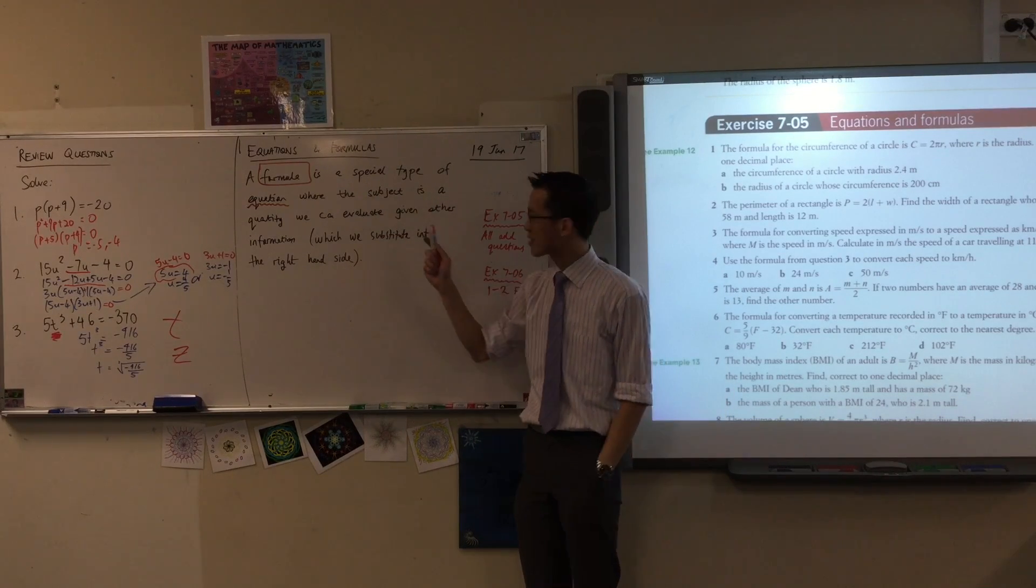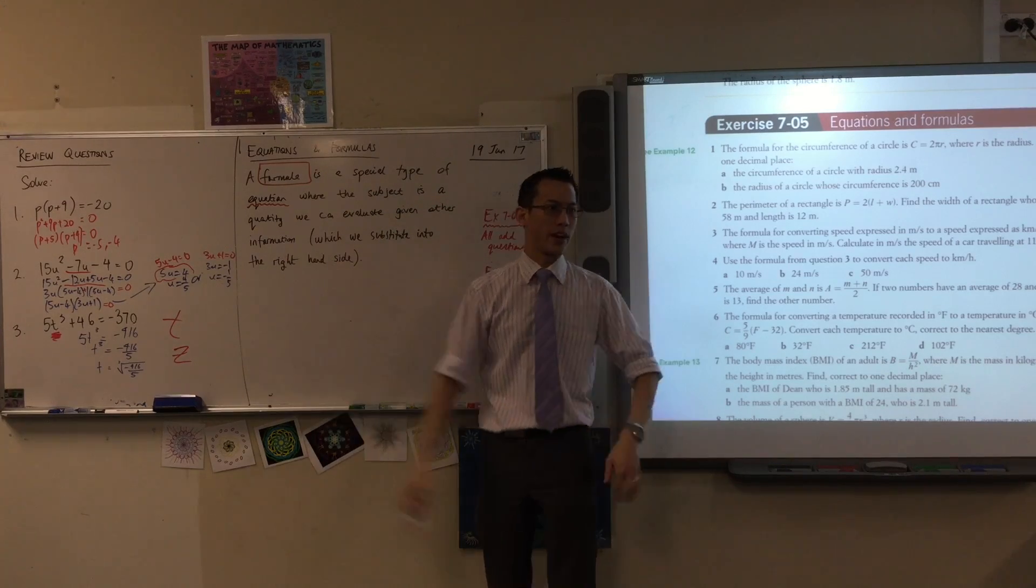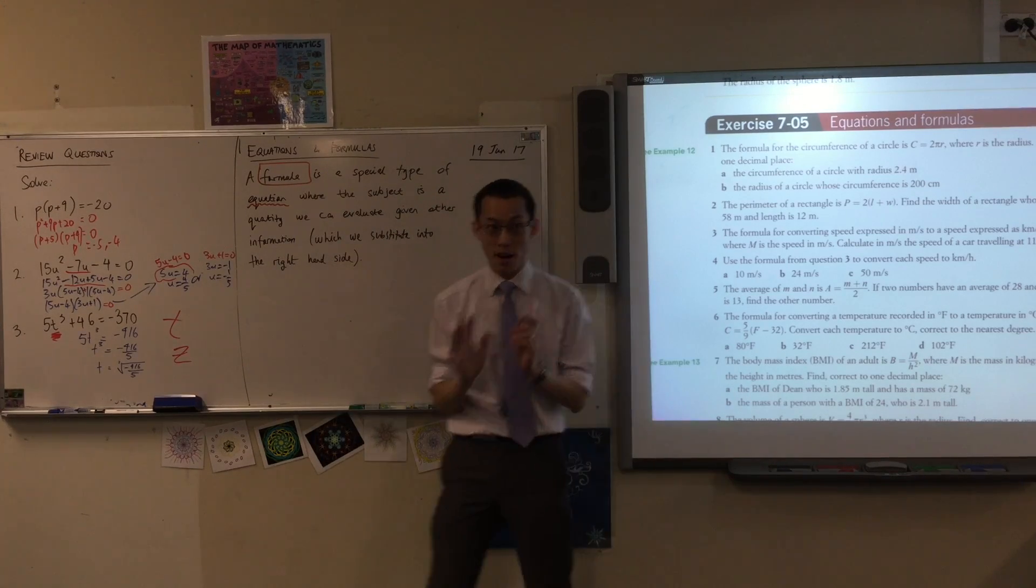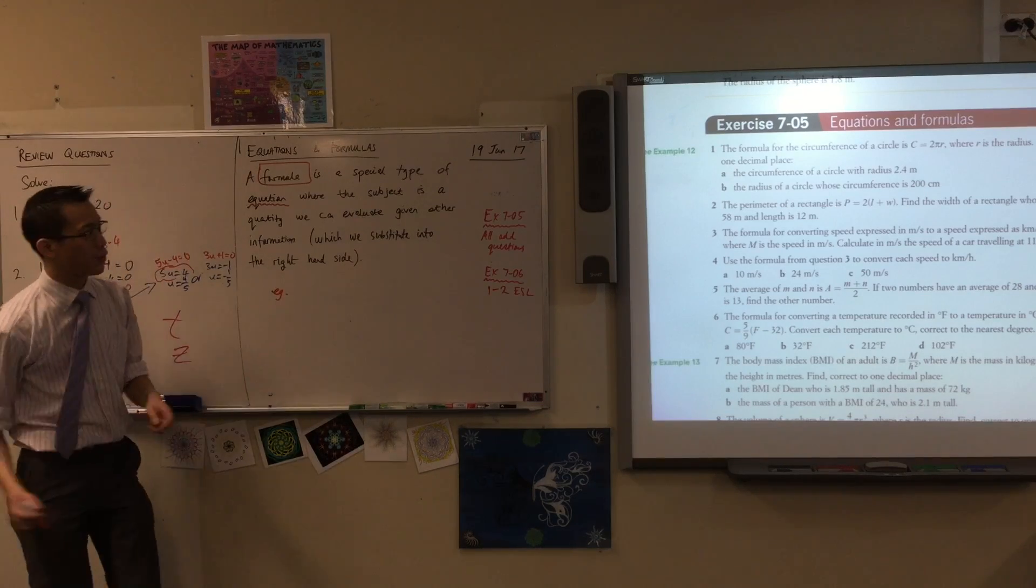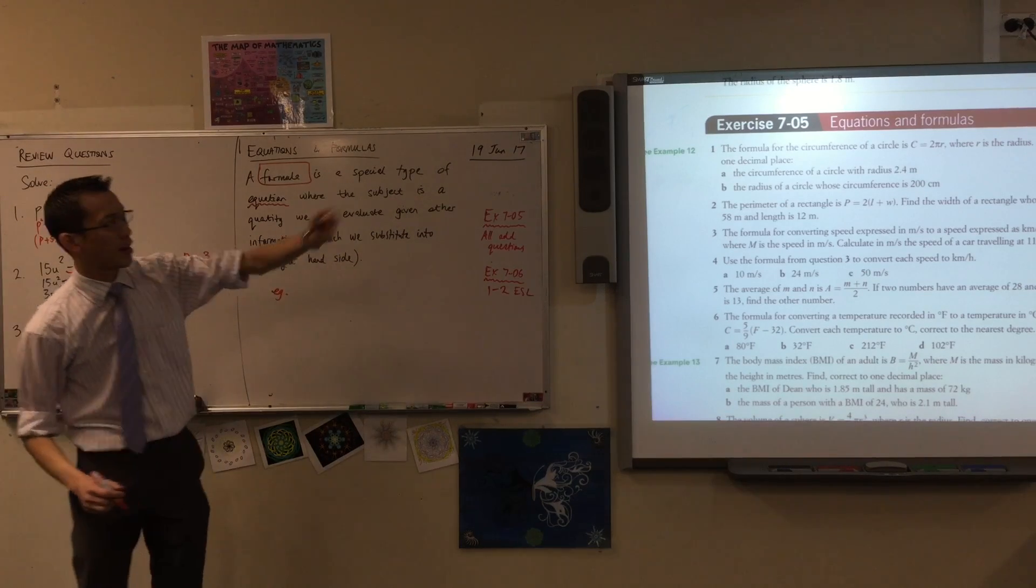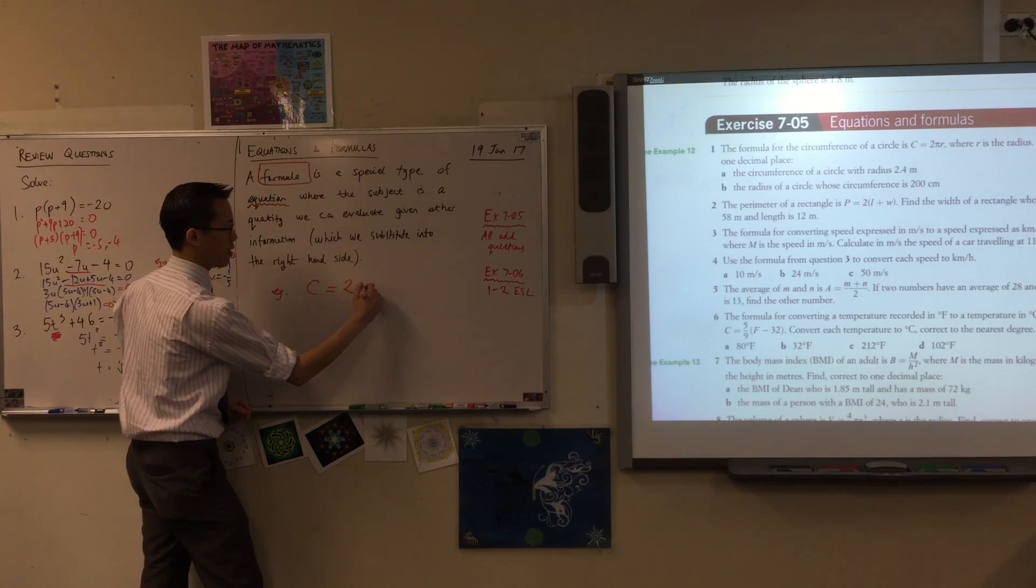It's an equation where the subject—I'm going to define this in a second—the subject is a quantity we can evaluate. Let's unpack that. This will be much easier if I give you an example. So underneath here, let me give you the formula that comes in this first question: C equals 2πr.